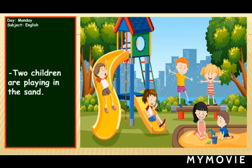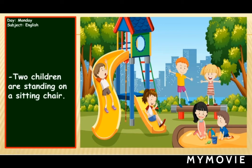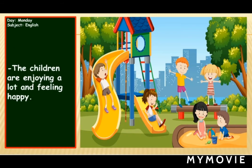Number five, two children are playing in the sand — you all must enjoy playing in the sand! Number six, two children are sliding and enjoying the slides. Number seven, two children are standing on a bench. Number eight, the children are enjoying a lot and feeling happy. Kids, you all must enjoy when you go to the park with your buddies.